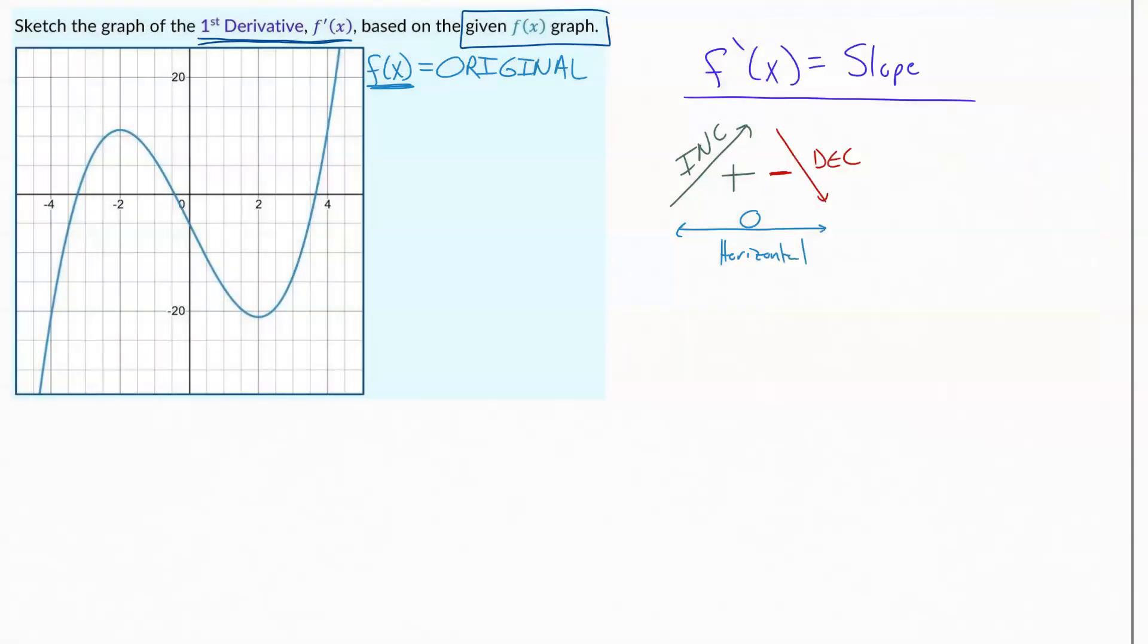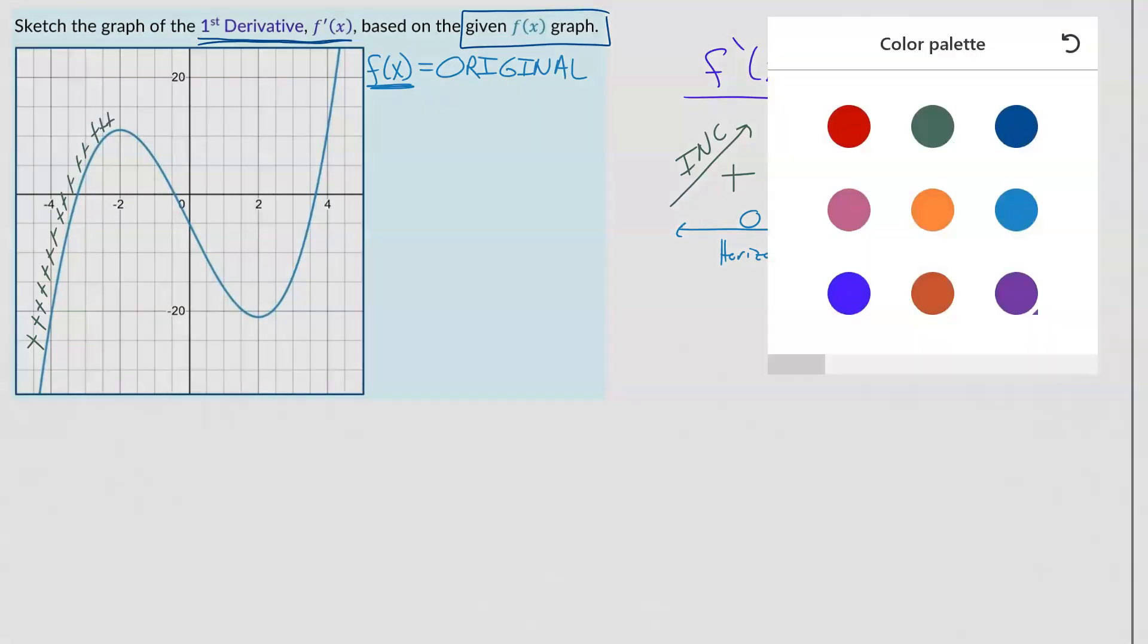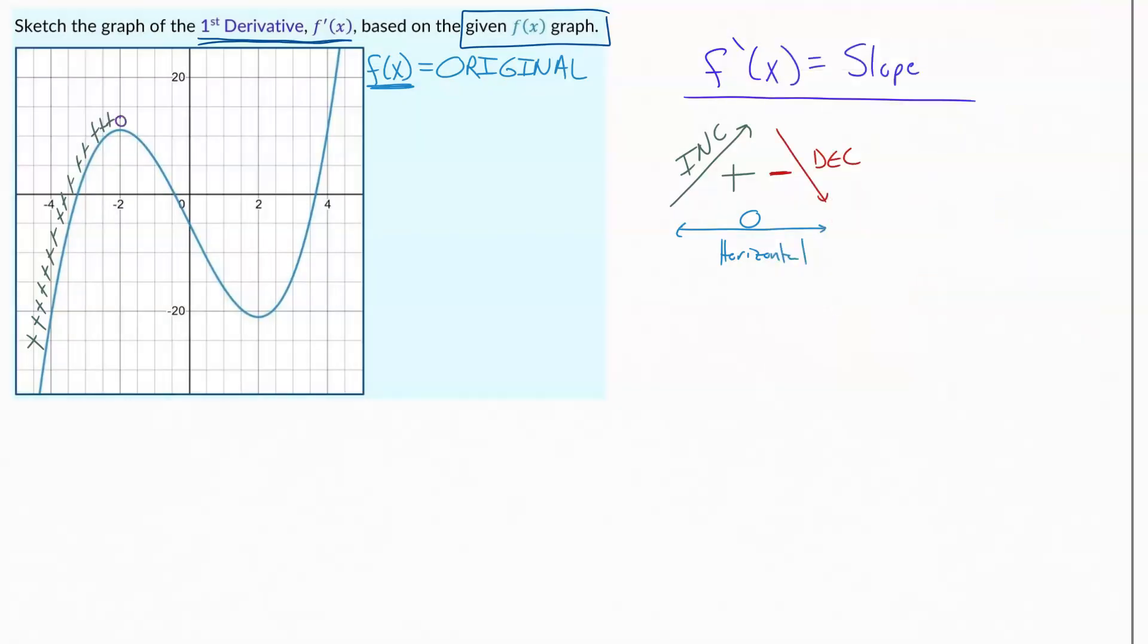So looking at our original graph, we would say the graph is headed up. We go positive, positive, positive through this whole section here. We get to the top. That's when it's going to go horizontal for a second. So that's going to be a zero right there.